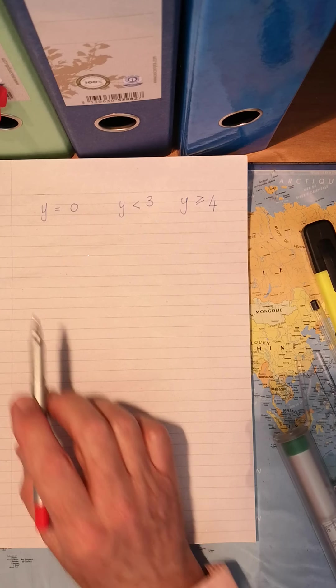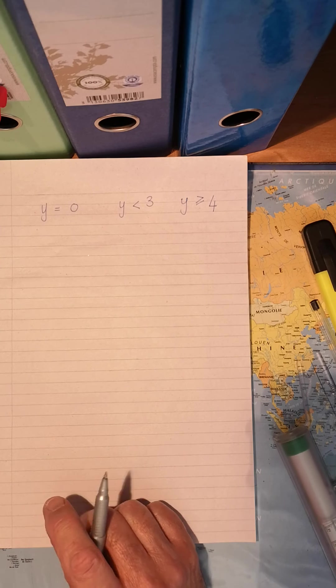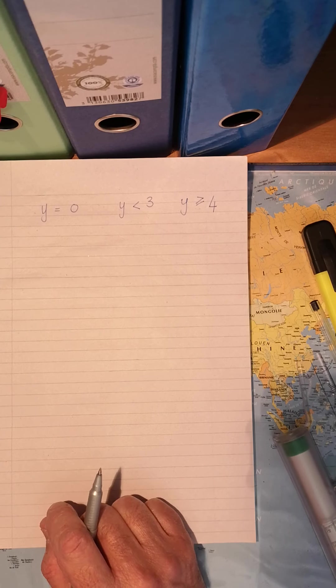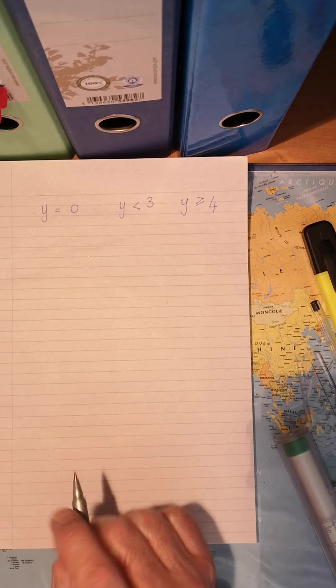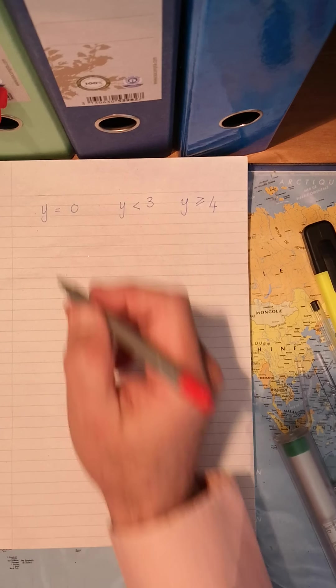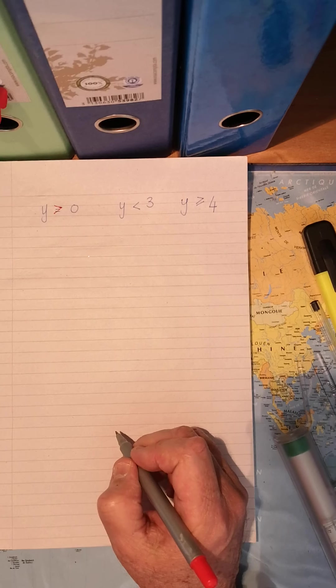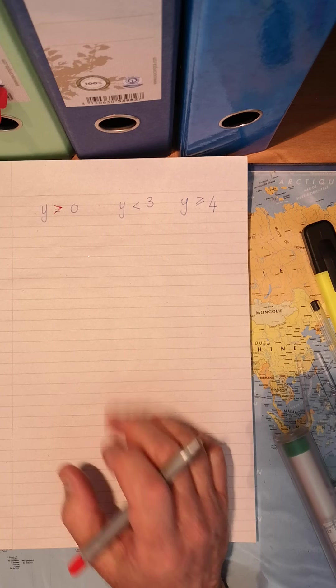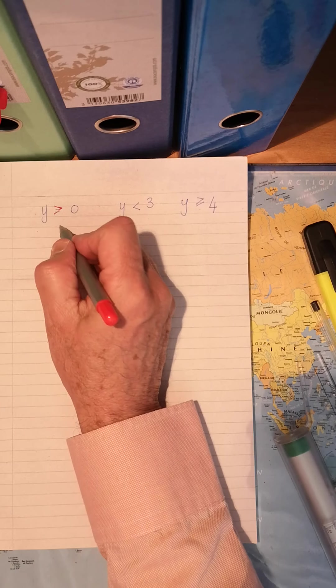But if we look at this one, if they give you Y is equal to naught, Y is equal to naught. Well, what could that be? We don't know. So let's change that sign. Y is bigger than naught. So what numbers could we use? Y is bigger than naught. Well, could we use naught?